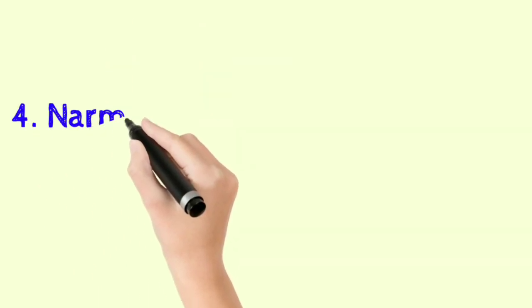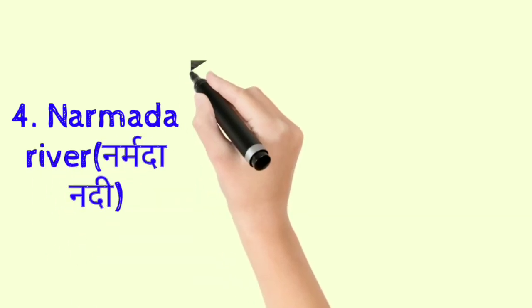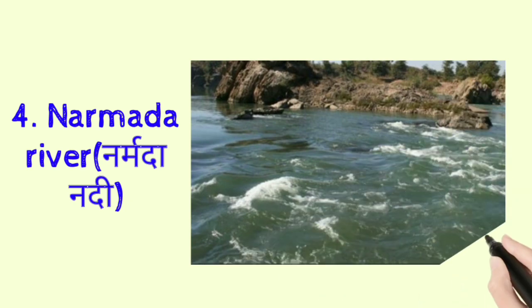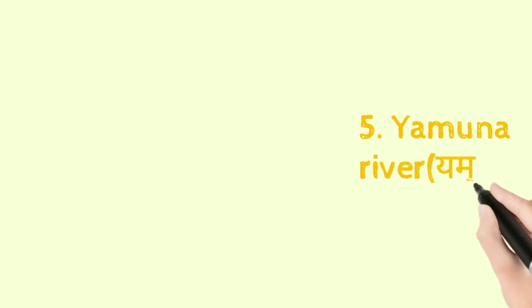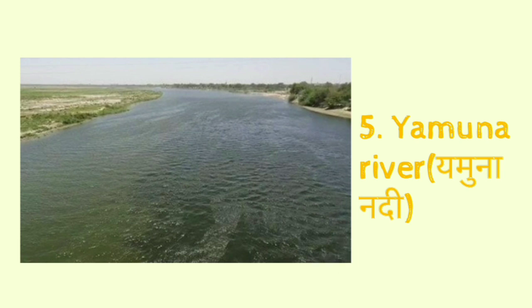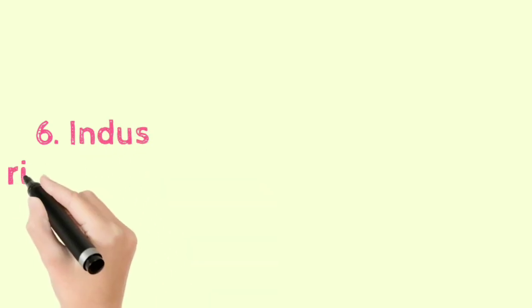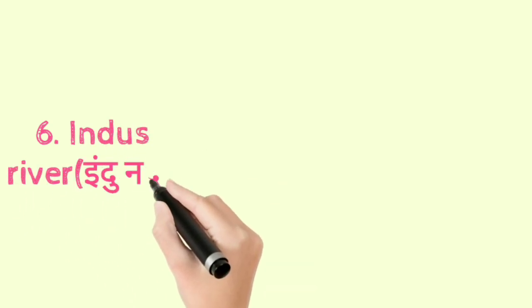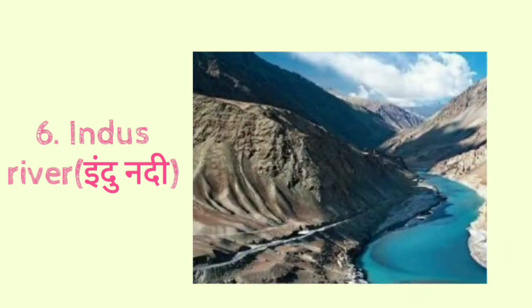Fourth, Narmada river — N-A-R-M-A-D-A river, Narmada river. Fifth, Yamuna river — Y-A-M-U-N-A river, Yamuna river. Sixth, Indus river — I-N-D-U-S river, Indus river.